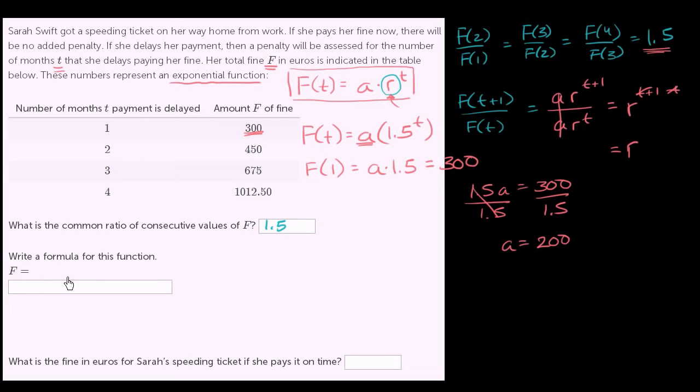So our formula for our function is 200, that's our a, times 1.5 to the t power. Now let's think about the next question. What is the fine in euros for Sarah's speeding ticket if she pays it on time?